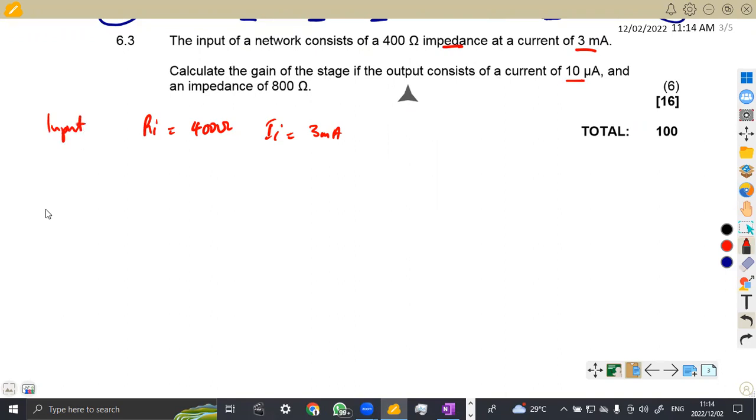So let's just write this is our input and this is our output. On the output, we've got a current and also an impedance. So the impedance of 800 ohms and the output current of 10 microamps. That is what we are given. The question is for you to calculate the gain.